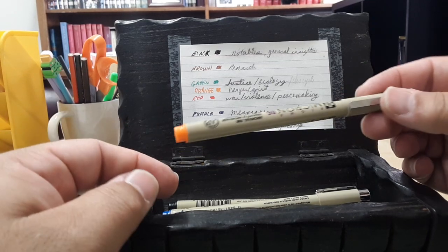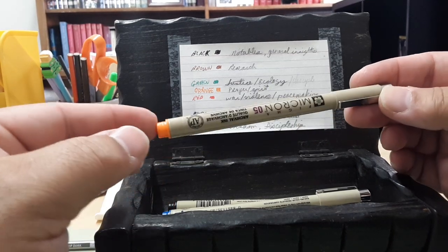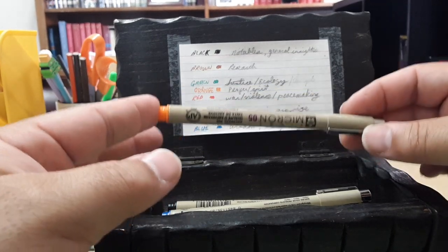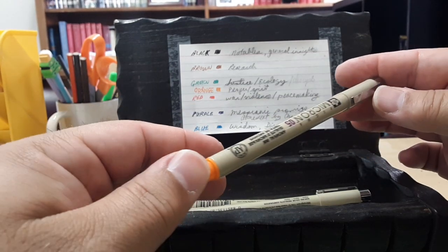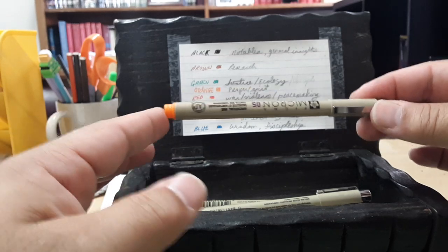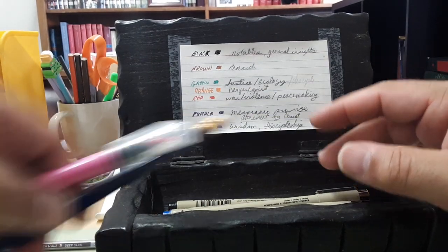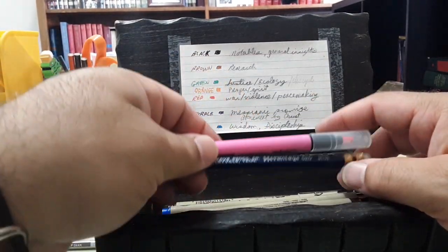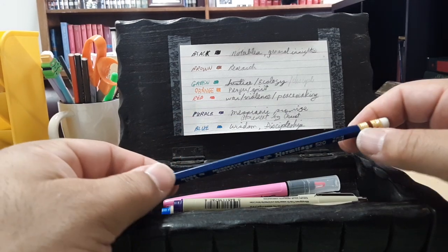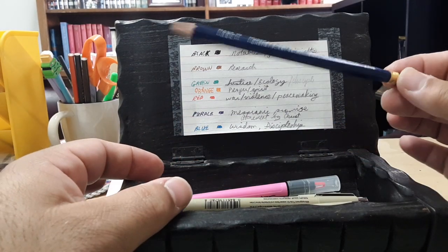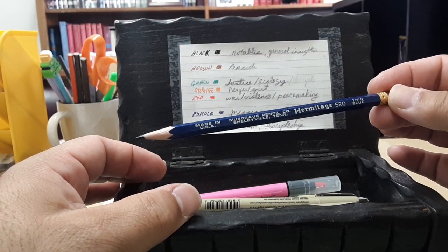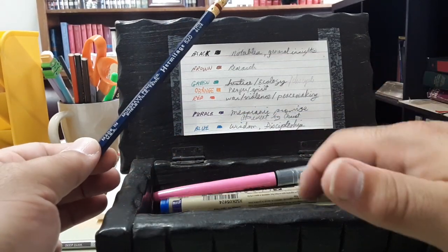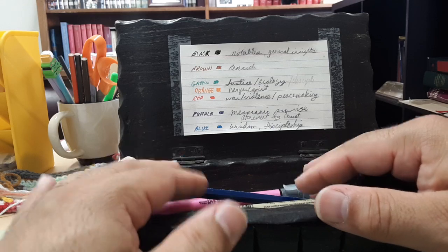And then orange is my Pentecostal color. So it's prayer, spiritual things, anything having to do with life in the spirit, things like that. So I think that covers it. I do have a yellow highlighter, but it's at home. I also have a yellow Hermitage Musgrave pencil, but it looks like it's not in here at the moment, but that's okay.